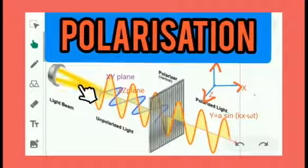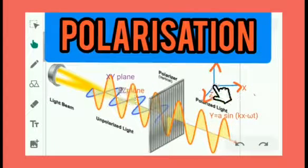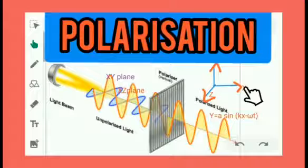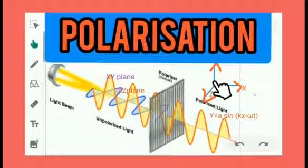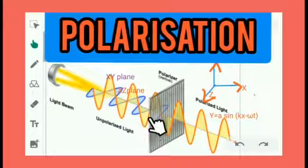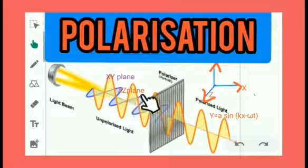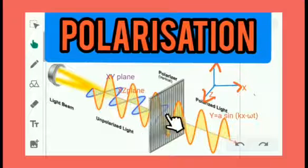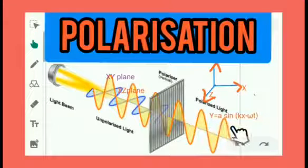This is unpolarized light. It is propagating along the x-direction. That means the vibrations are in the x-y plane and the x-z plane. The x-y plane and the x-z plane are both perpendicular to the x-direction, which is the direction of propagation of the wave.